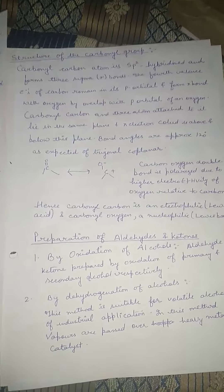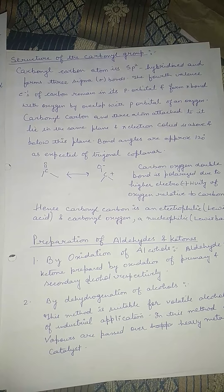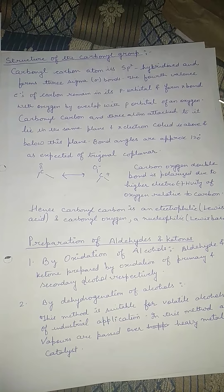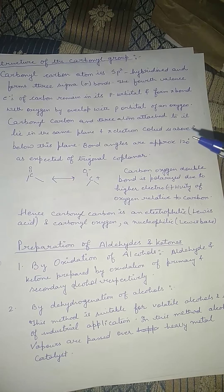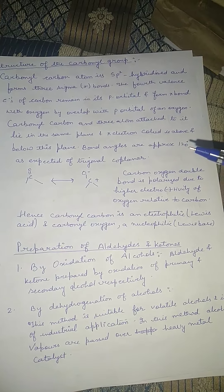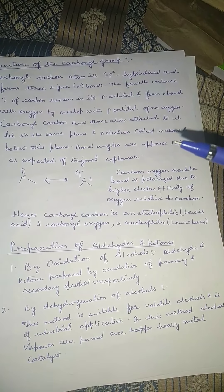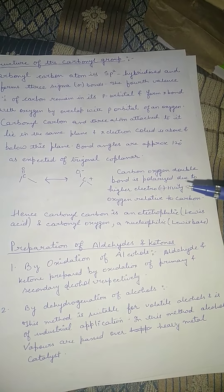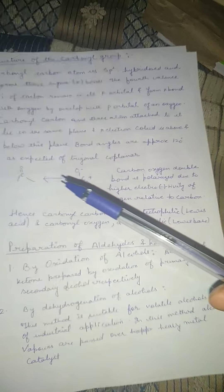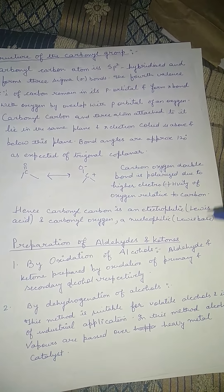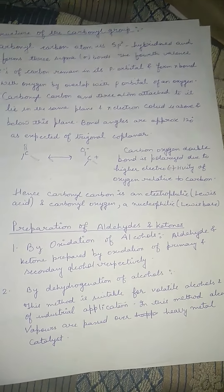The carbonyl carbon atom is sp2 hybridized because it contains a double bond and forms three sigma bonds. The fourth valence electron of carbon remains in its p orbital and forms a pi bond with oxygen by overlap with the p orbital of oxygen. The carbonyl carbon and the three atoms attached to it lie in the same plane, with the pi electron cloud above and below this plane. The bond angle is approximately 120°. The C=O bond is polarized due to the high electronegativity of oxygen, making the carbonyl carbon an electrophile (Lewis acid) and oxygen a nucleophile (Lewis base).